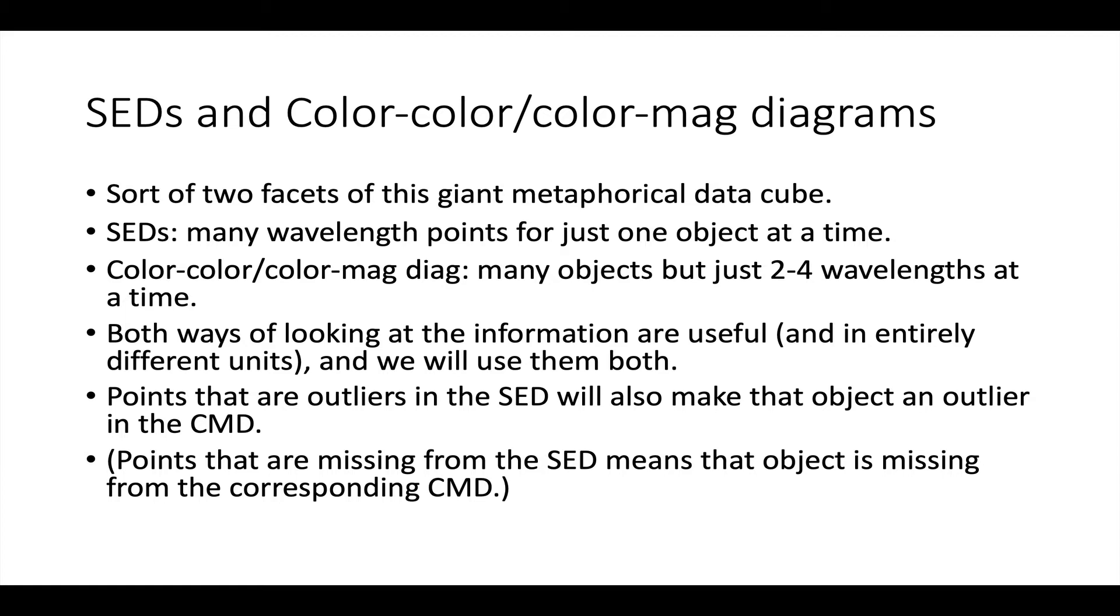The points that end up being outliers in the SED will also make that object an outlier in the color-magnitude diagram, and points that are missing from the SED means that the object is going to be missing from that corresponding color-magnitude diagram.